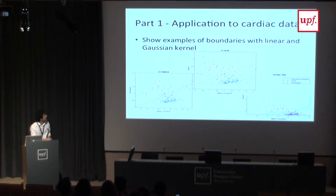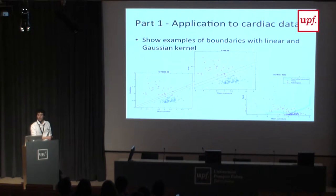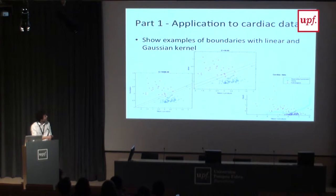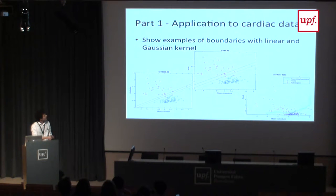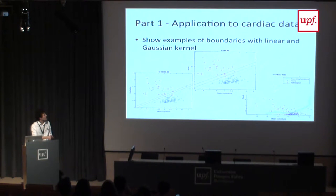We tried to separate linearly. With a high C, meaning hard edges, we failed to get a harder boundary behavior. Instead with a lower C, we perfectly divided the data into healthy and pathological with a soft margin behavior. We also tried the kernel trick using a Gaussian function, which gave a better division between healthy and pathological.